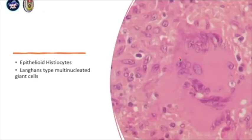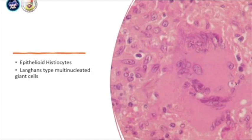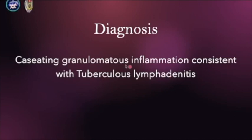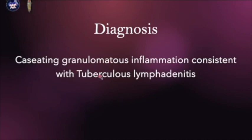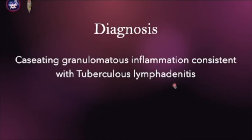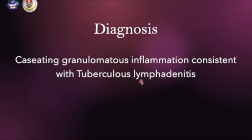And within this granuloma, you can see a Langhans-type multinucleated giant cell. Usually this giant cell has the multinucleated area in the periphery and a clear area in the center. So this is the characteristic of caseating granulomatous inflammation or caseating granulomatous lymphadenitis, consistent with tubercular lymphadenitis in this region. But the gold standard of diagnosis is still preferably either molecular technique or culture. Histologically, most of the time it is caused by tubercular lymphadenitis.